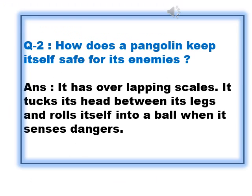Question number 2: How does a pangolin keep itself safe from its enemies? Answer: It has overlapping scales. It tucks its head between its legs and rolls itself into a ball when it senses danger.